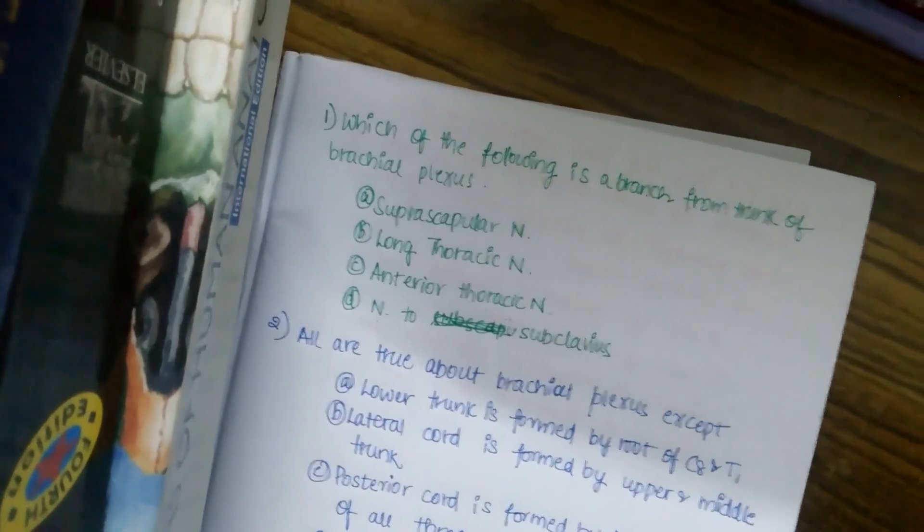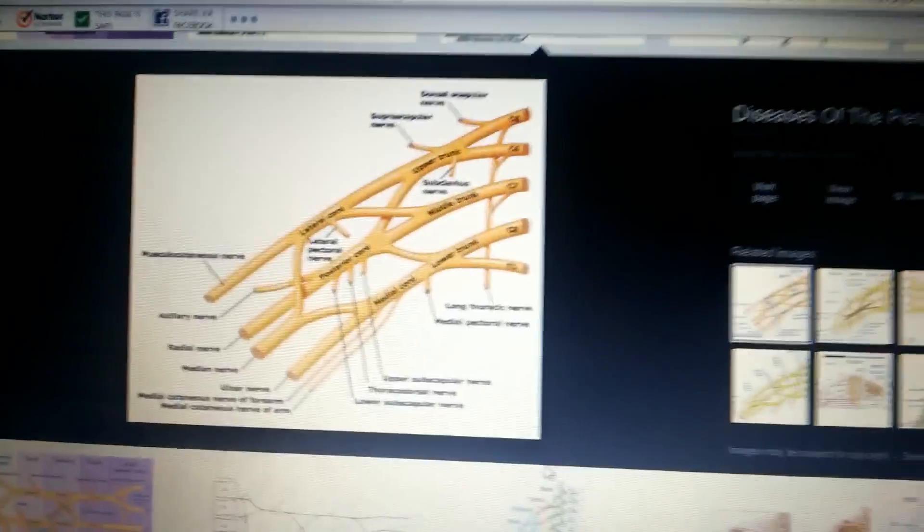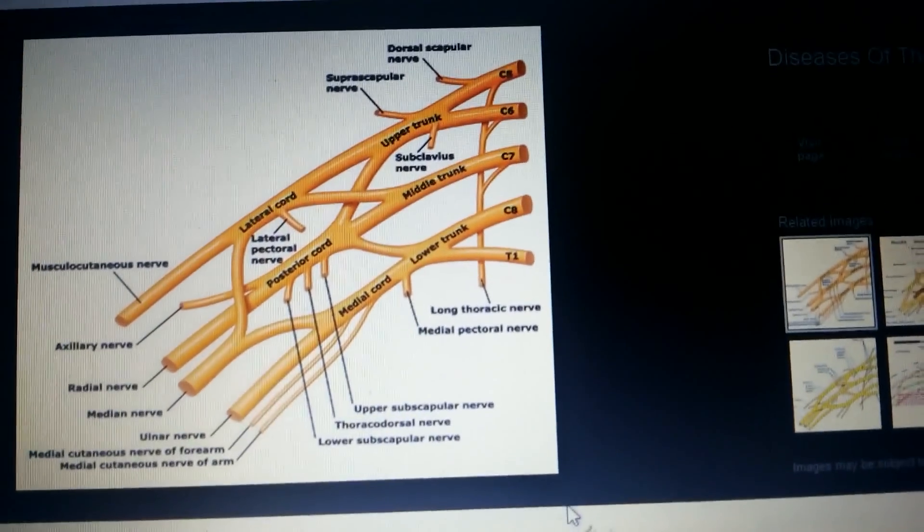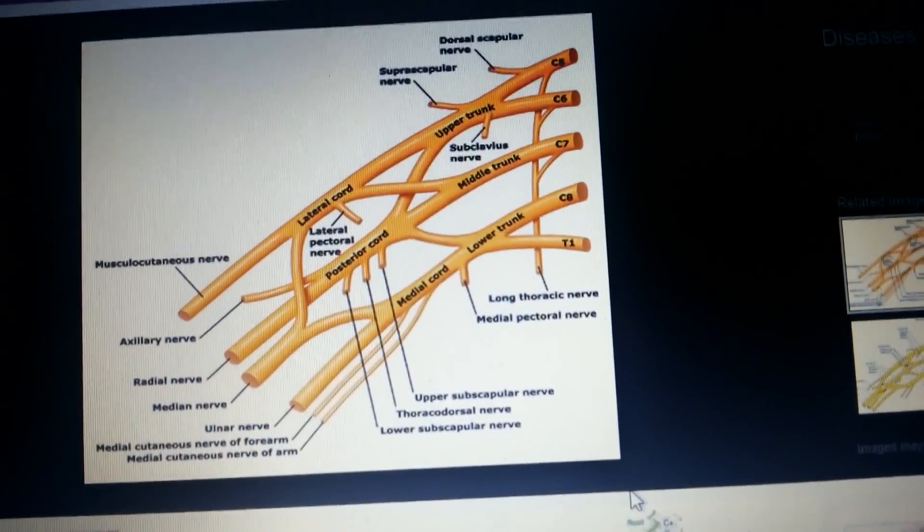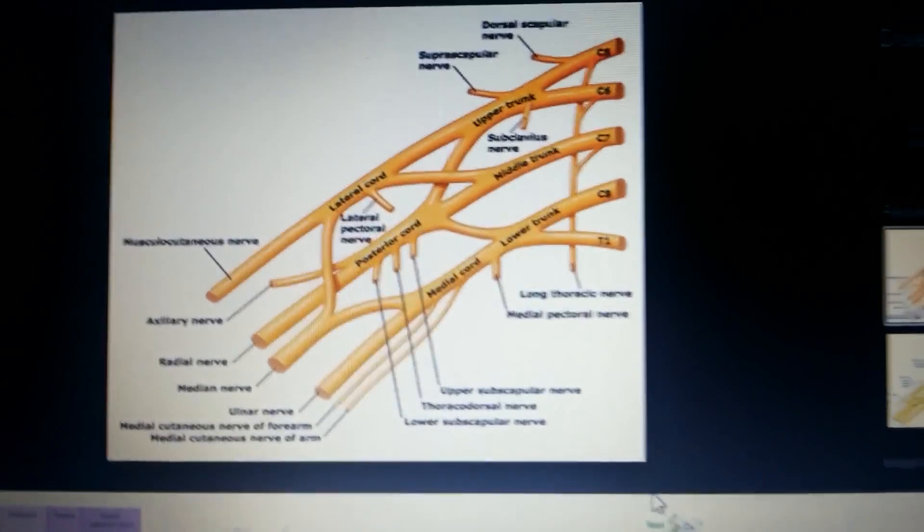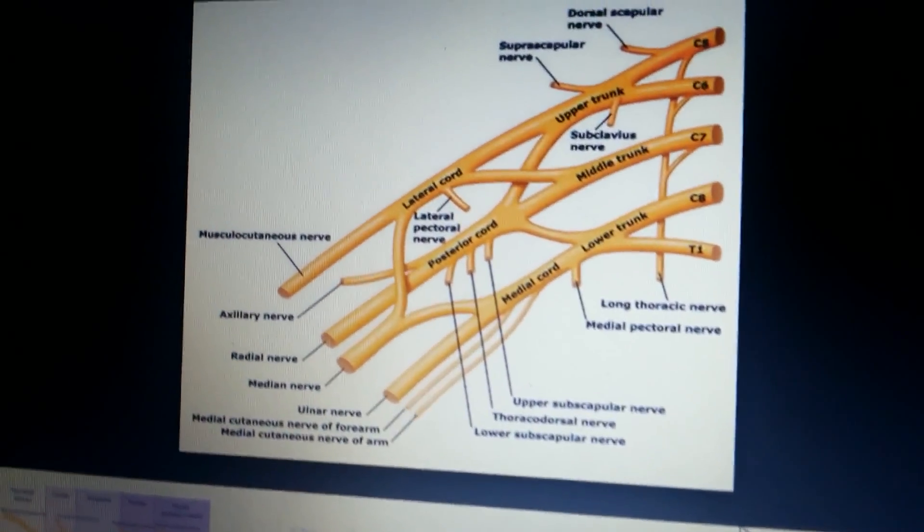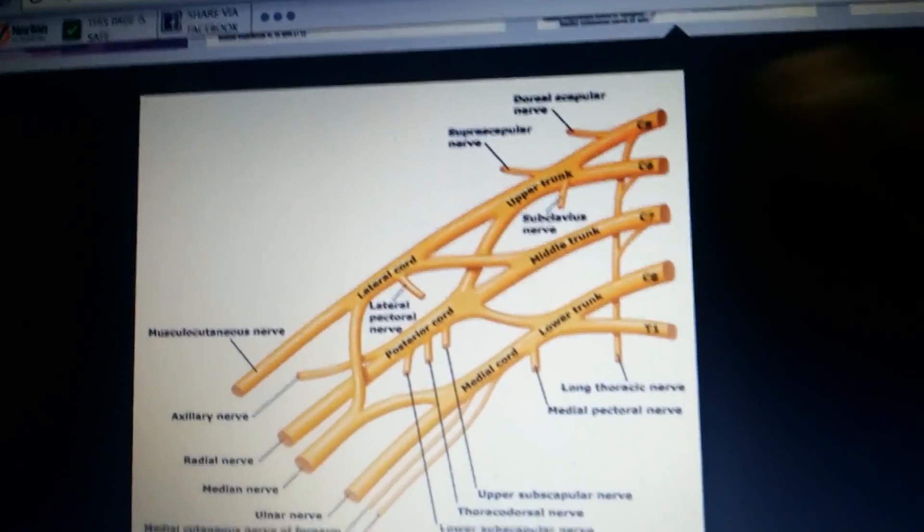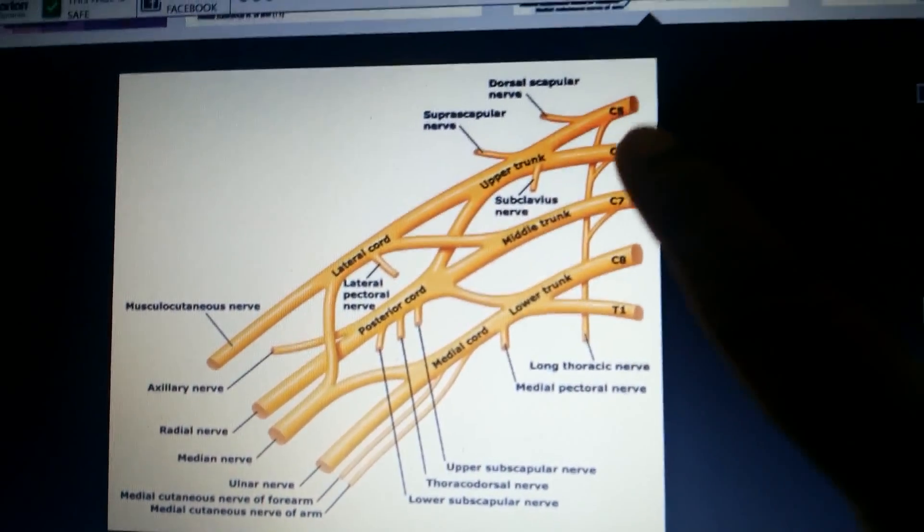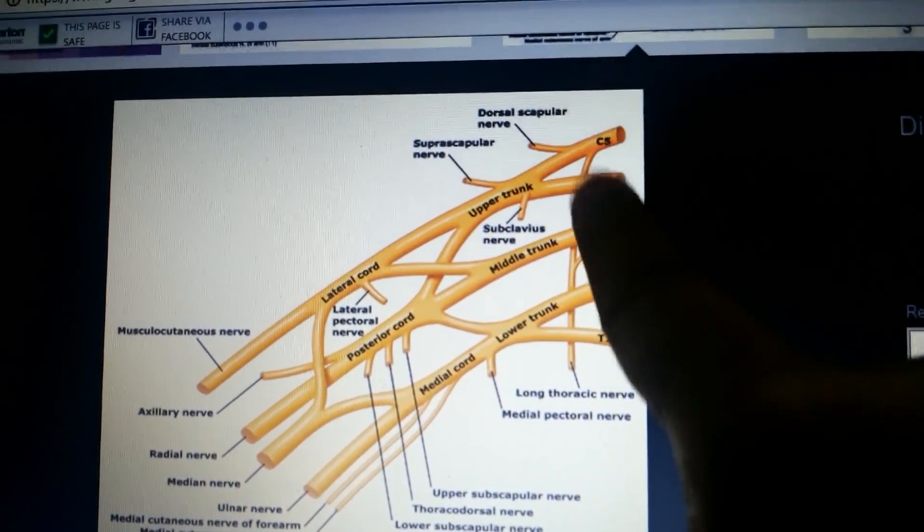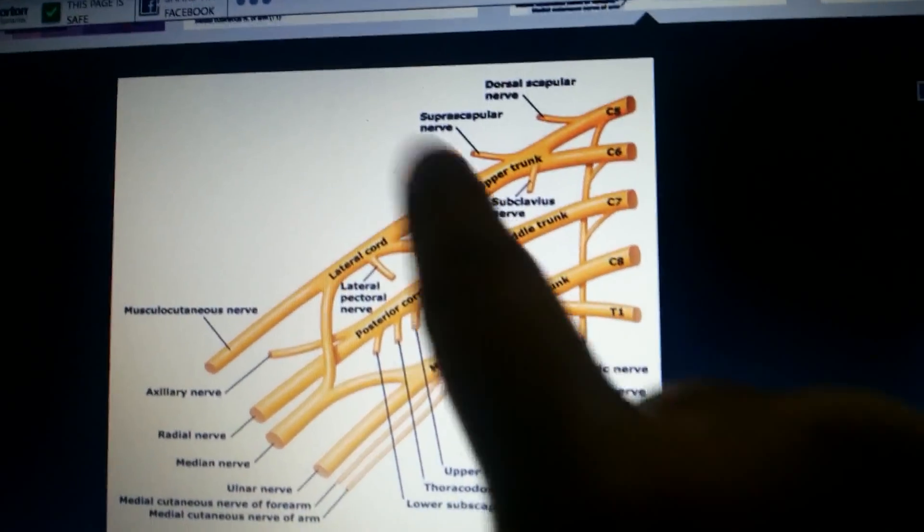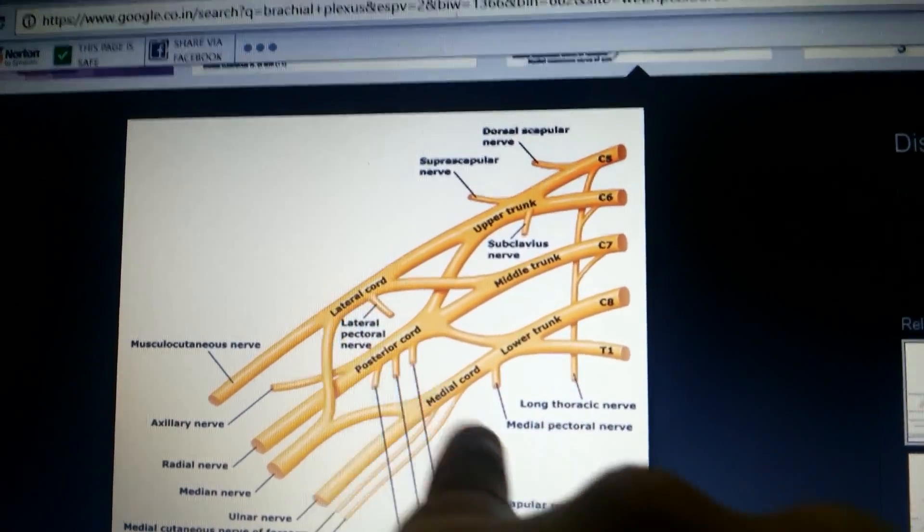This is a diagram I got from the net. I hope you all are able to see it. The brachial plexus consists of roots, trunks, divisions, cords, and branches.